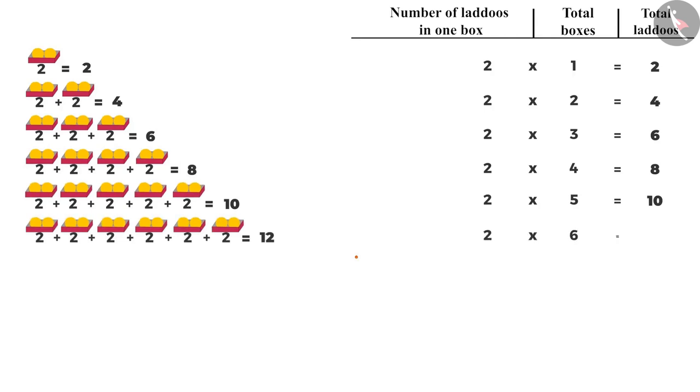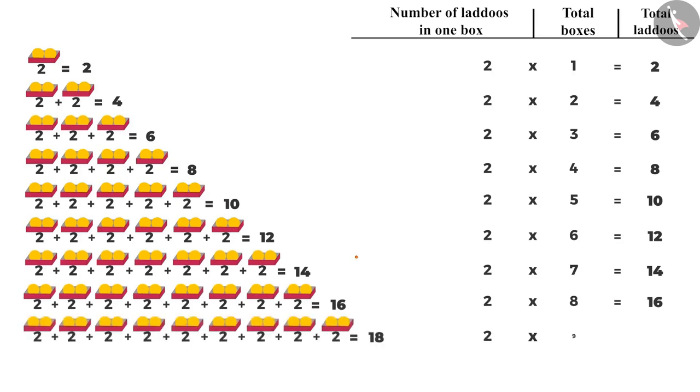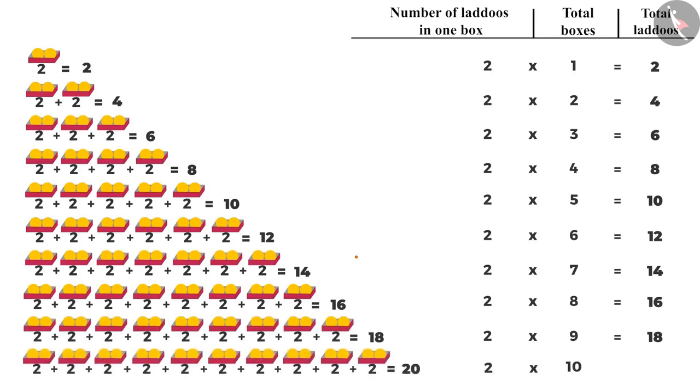Number of laddus in seven boxes will be two multiplied by seven, that is fourteen. Number of laddus in eight boxes will be two multiplied by eight, that is sixteen. In nine boxes, it will be two multiplied by nine, that is eighteen. And the number of laddus in 10 boxes will be 2 multiplied by 10 which comes to 20.